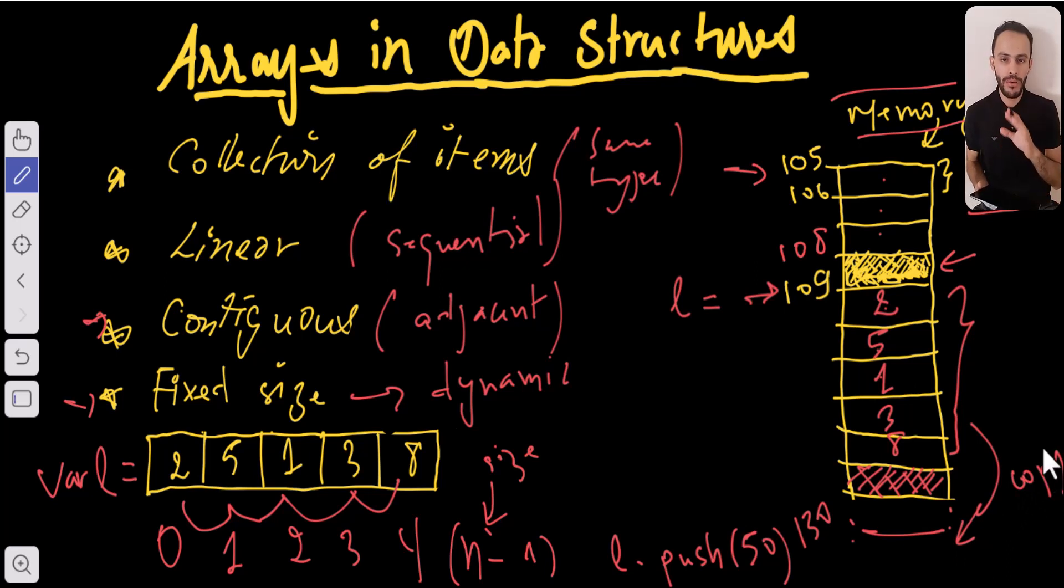And after that, it's going to add the new element, which is 50. Now the new added element is going to be found at address 135, which means that from 135 we're going to make five jumps or five steps.